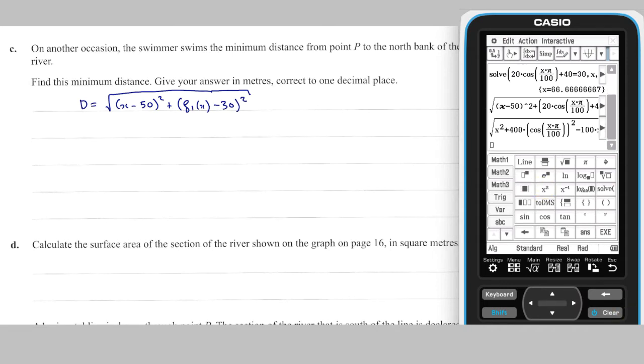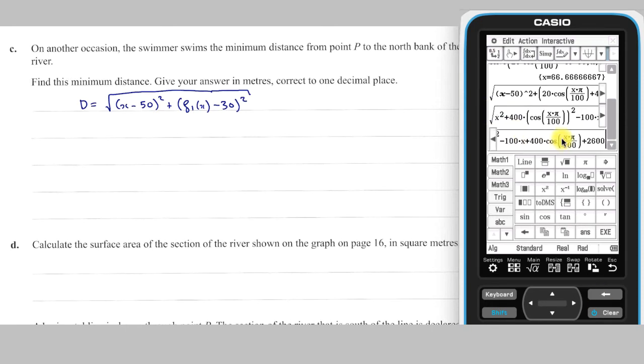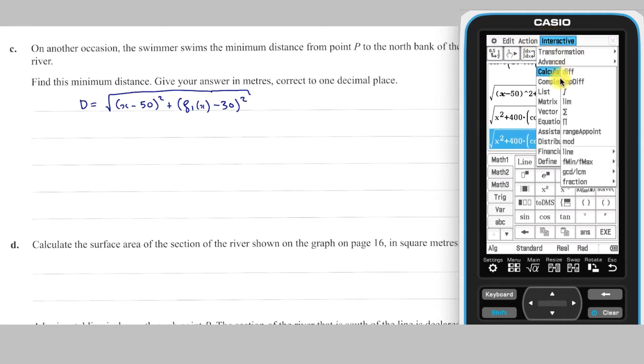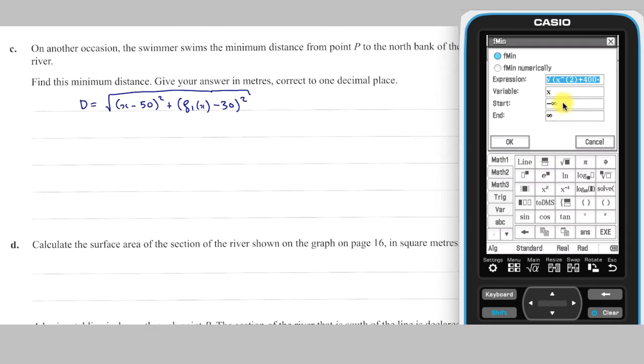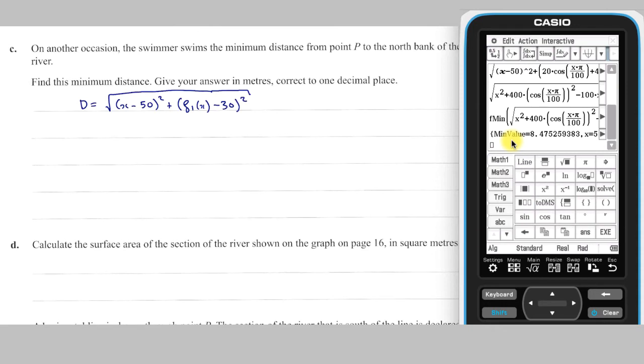This expression for d can be minimized using the fmin command for some sensible range of x values, like x between 0 and 100. This minimum distance is 8.5 metres to one decimal place.